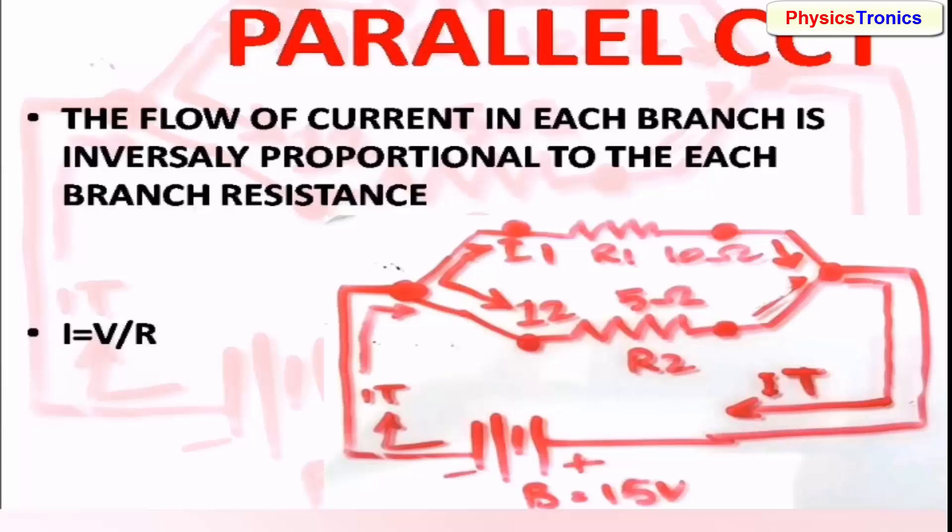The current can be calculated according to Ohm's law: I equals V over R. Because every component in parallel is directly connected to battery or source voltage, the voltage will remain the same but the value of the resistance will determine the current.